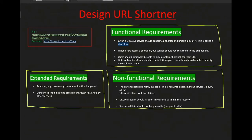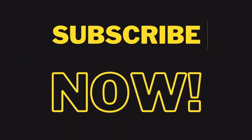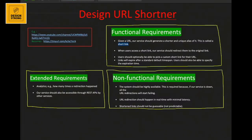Today we'll see how to do system design for a URL shortener. A URL shortener is a service available online that can create short URLs for long URLs. For example, if I take the channel URL, which is very long, and paste it into tinyurl.com and click submit, it gives me a short URL. When this short URL is clicked, it redirects back to the original URL.